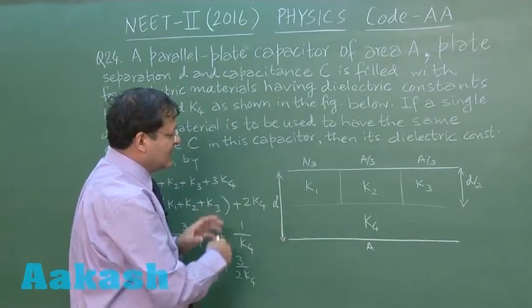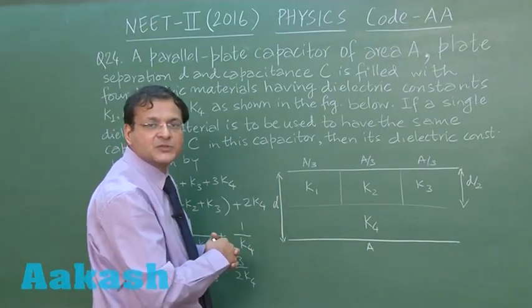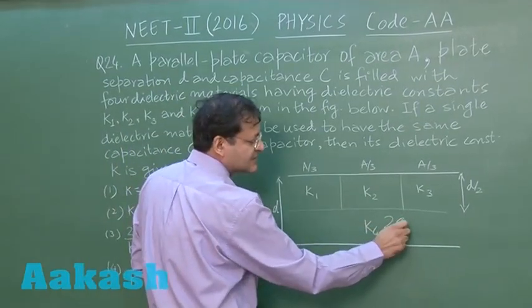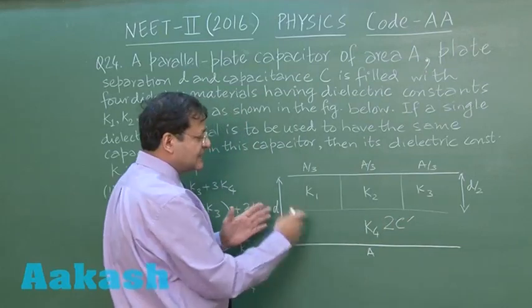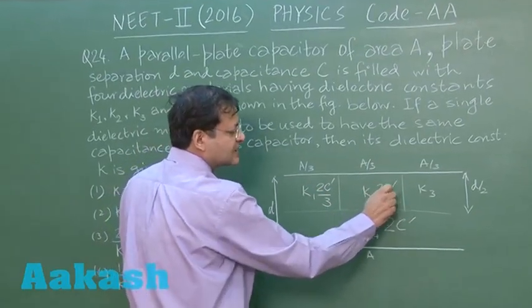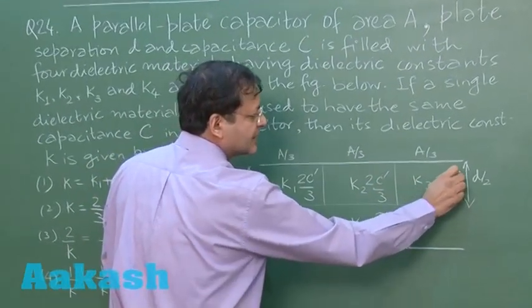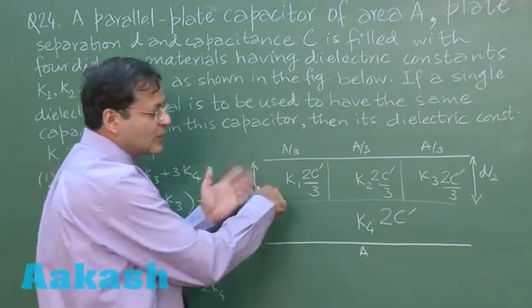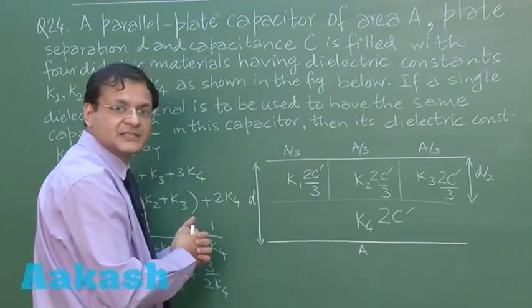So what we are doing here is, let us suppose the total air capacitance was C dash. So here this portion will be having the capacitance 2C dash, and this one will be having 2C dash by 3, 2C dash by 3, and 2C dash by 3, right.